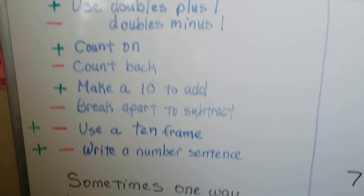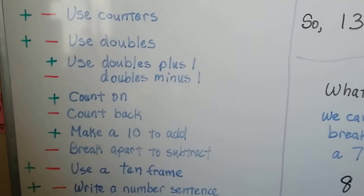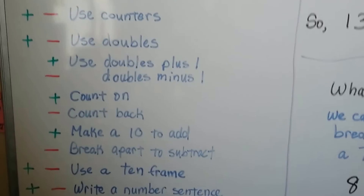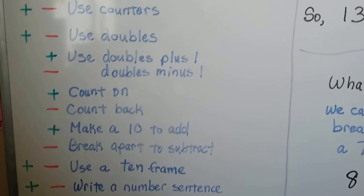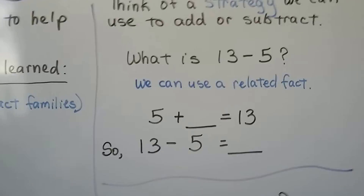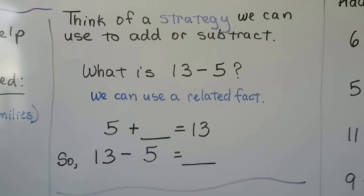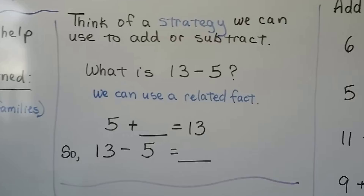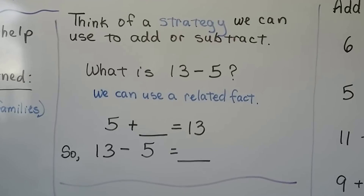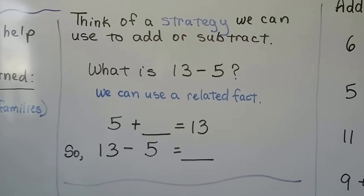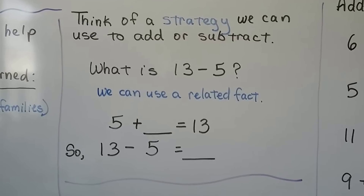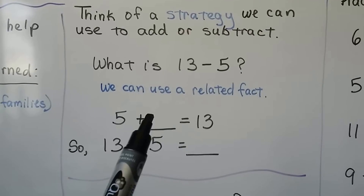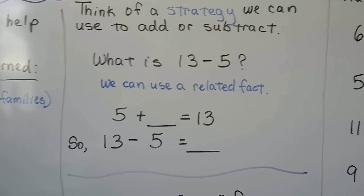You can go back through the grade one math playlist and find all these strategies if you haven't seen them. Think of a strategy we can use to add or subtract. What is 13 minus 5? We can use a related fact. We can say 5 plus a number is equal to 13.